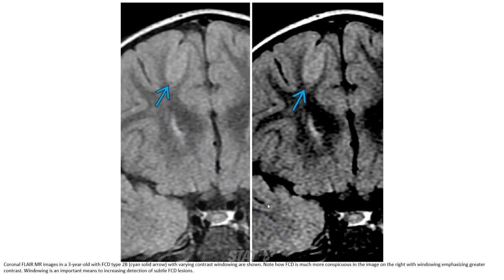This is a coronal FLAIR image in a 3-year-old with focal cortical dysplasia Type B, with varying contrast windowing shown. Note how focal cortical dysplasia is much more conspicuous in the image with windowing emphasizing greater contrast. Windowing is an important means to increase detection of subtle focal cortical dysplasia on MRI.